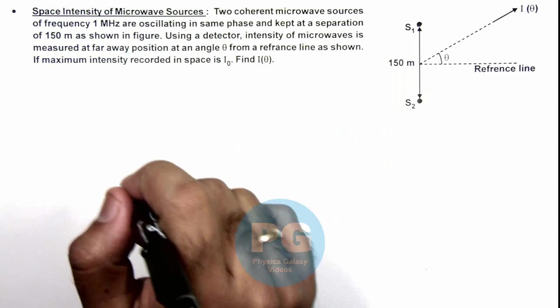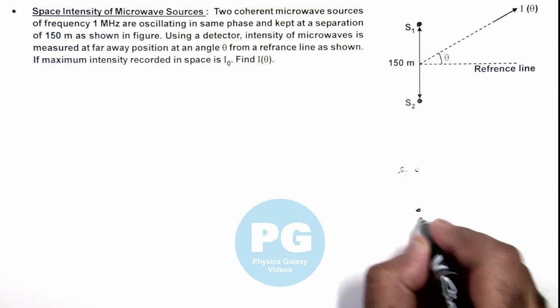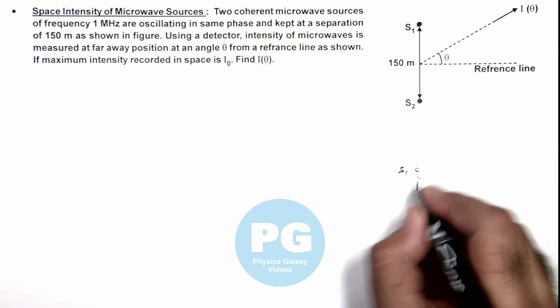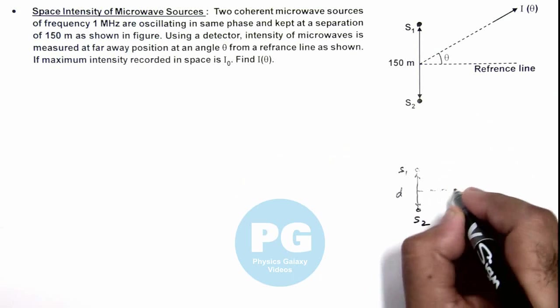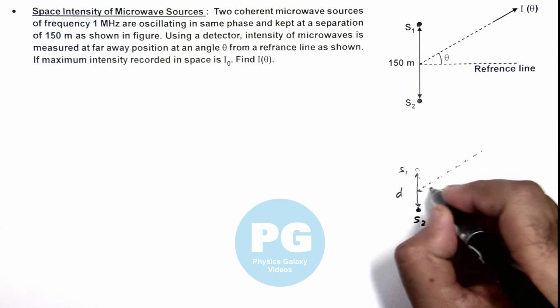So here we can analyze if these are the two sources S1 and S2, and the separation between the sources is considered as d.